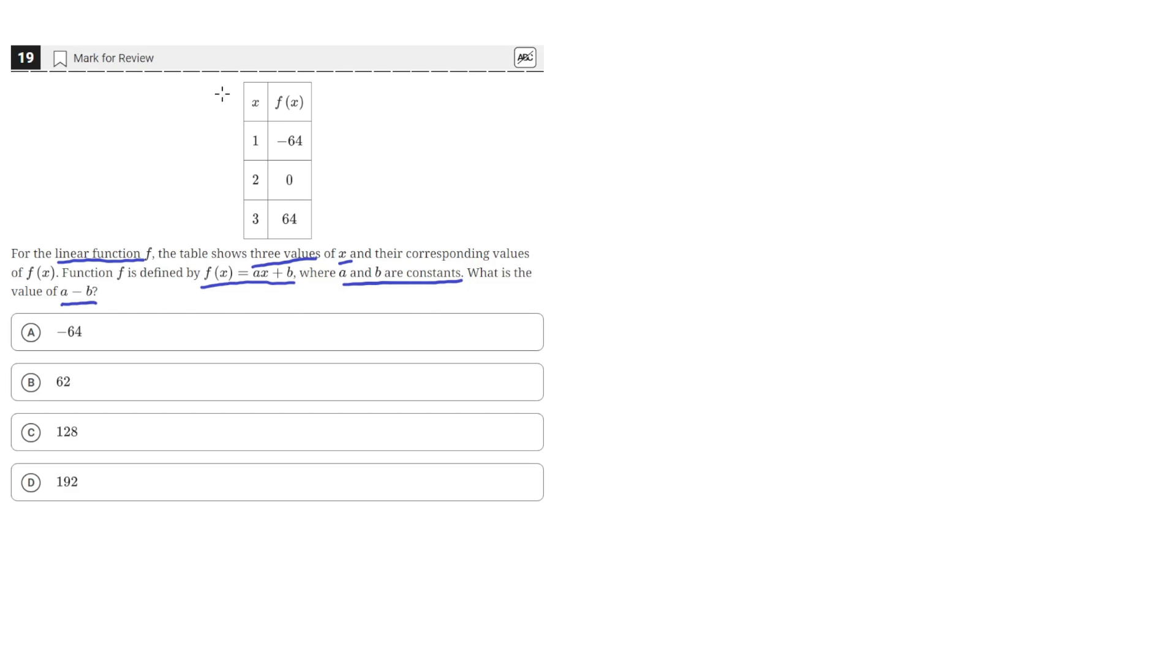We have this table showing us values of x and their corresponding values of f(x). We can use this to write the equation of a line using this form ax plus b. In order to find the value of a, which is just the slope, since that's what's being multiplied with x, we can take two points and find the rise over the run between those two points.